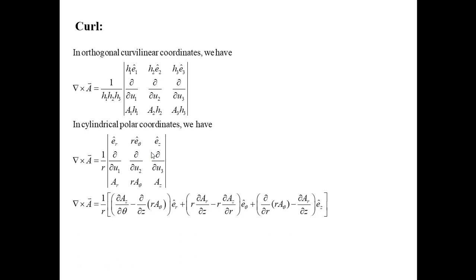For curl in cylindrical polar coordinates, the expression is ∇×A = (1/(h₁h₂h₃)) times a determinant. Replacing u₁, u₂, u₃ with r, θ, z and the corresponding scale factors h₁=1, h₂=r, h₃=1, then expanding the determinant along the first row gives the curl expression.